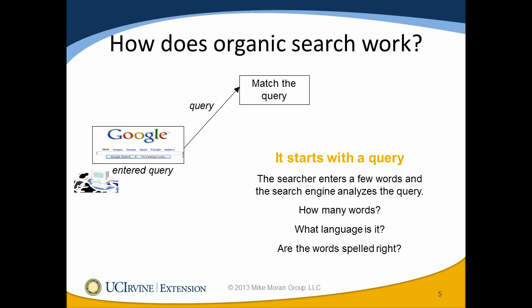Let's look at how organic search works. It starts with a query — yet another name for those keywords or key phrases someone types into the search box. When a searcher enters those words, the search engine analyzes the query. In Western languages, it needs to figure out what language it's in, how many words there are, and whether the words are spelled right. If they're not spelled right, the searcher will be presented with a 'did you mean' suggestion, where the search engine has found more popular words spelled almost the same.